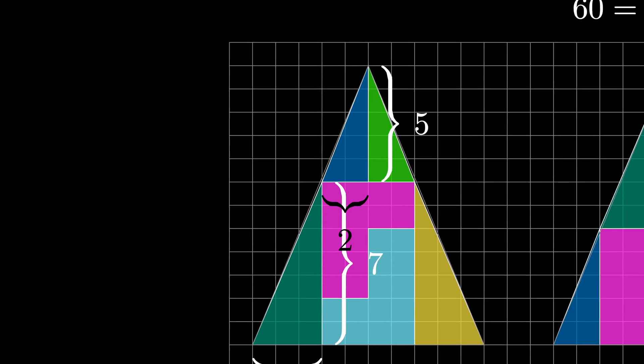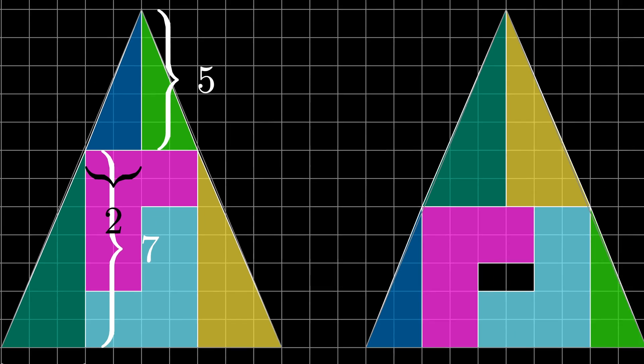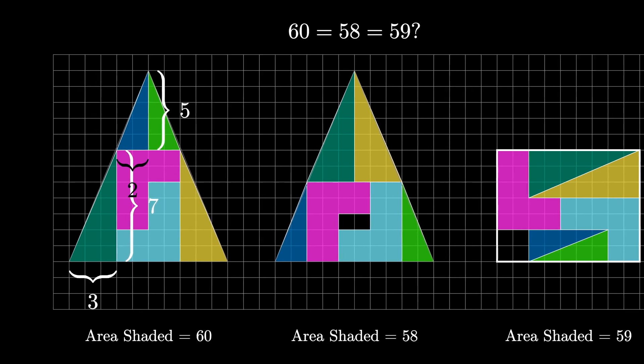If we zoom in on where these two triangles meet, we see that there's a gap between them and the side of the triangular shell. It turns out there's enough area on this side of the triangle to fill one half of a square, and the other side of the triangle has another half square.